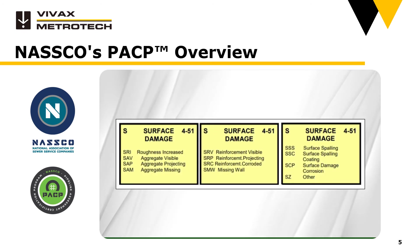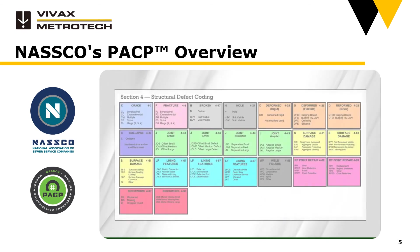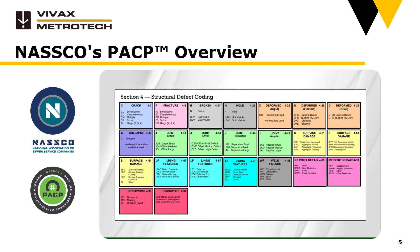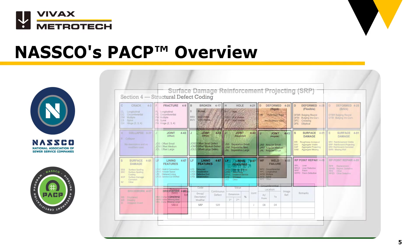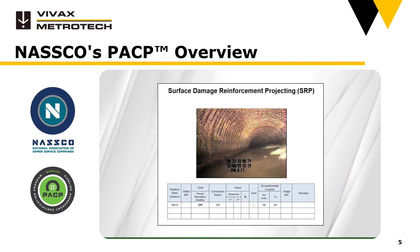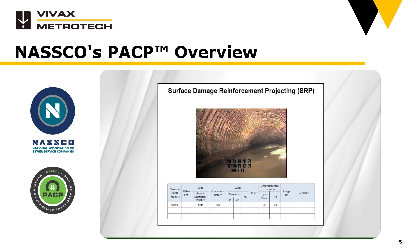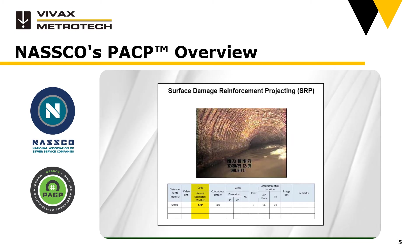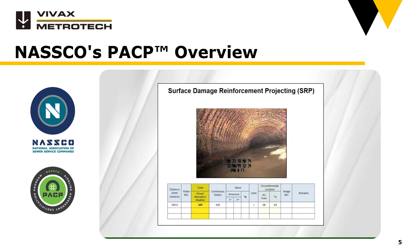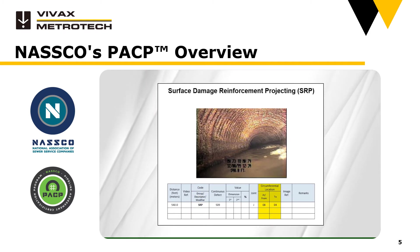The last example within the structural defect coding family is surface damage. This group of codes is used to describe a wide range of pipe material surface damage failures caused by hydrogen sulfide or other chemical attack, for instance. In this image, the reinforcement used in the concrete pipe is projecting, so we would code this as SRP, which stands for surface damage reinforcement projecting, at joint from 8 to 4. It is also coded as a continuous defect.